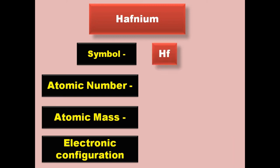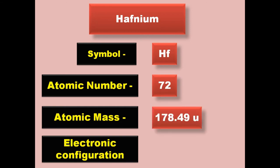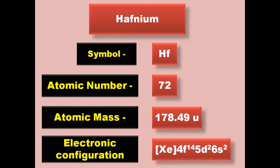Hafnium has symbol Hf, atomic number 72, atomic mass 178.49, electronic configuration [Xe] 4f14 5d2 6s2. Hafnium is a transition metal and exists in solid form at room temperature.